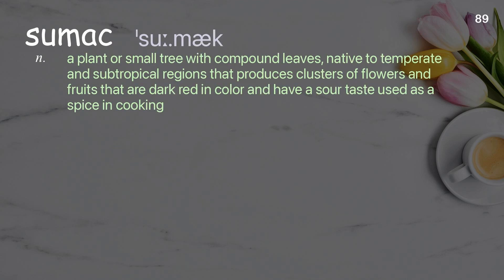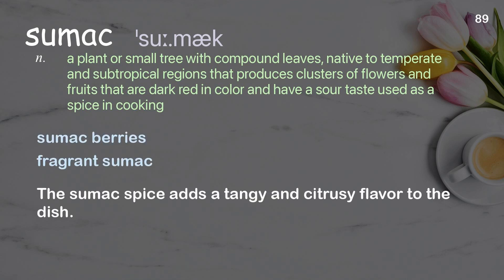Sumac: A plant or small tree with compound leaves, native to temperate and subtropical regions, that produces clusters of flowers and fruits — some dark red in color with a sour taste used as a spice in cooking. Examples: Sumac berries, Fragrant sumac. The sumac spice adds a tangy and citrusy flavor to the dish.